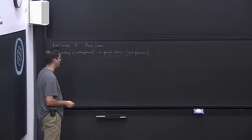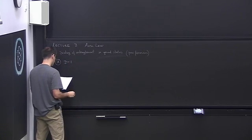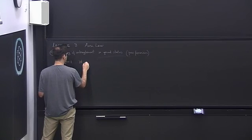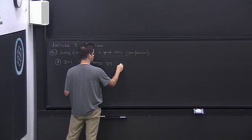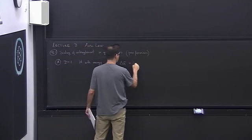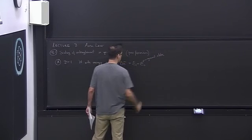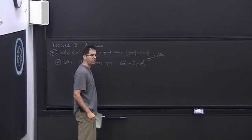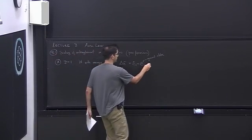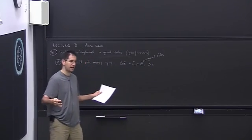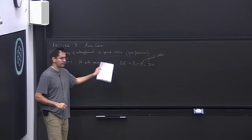We want to talk about the scaling of entanglement in ground states. We start with free fermions and consider one-dimensional systems with a Hamiltonian that has an energy gap. The energy gap is defined as the difference of energy between the first excited state and the ground state, defined in the limit of a very large system. We are interested in the case where in the thermodynamic limit — the limit of an infinite system — we still have a finite gap.